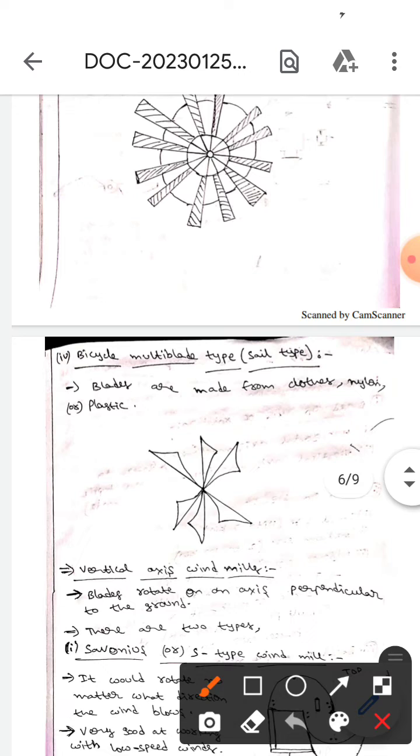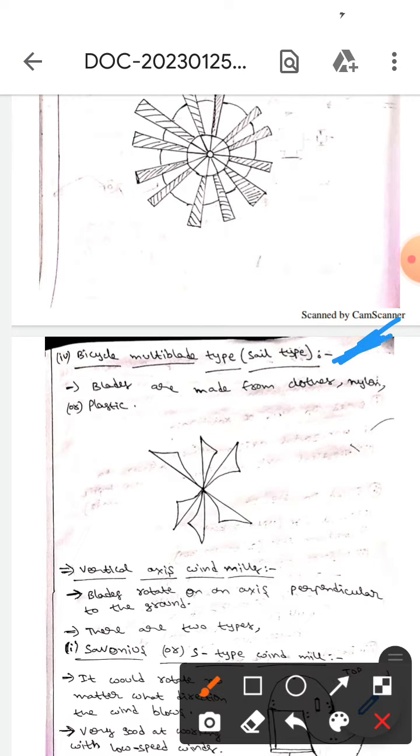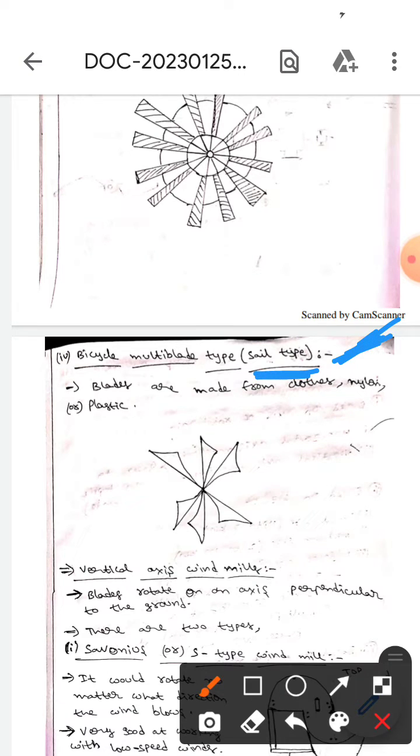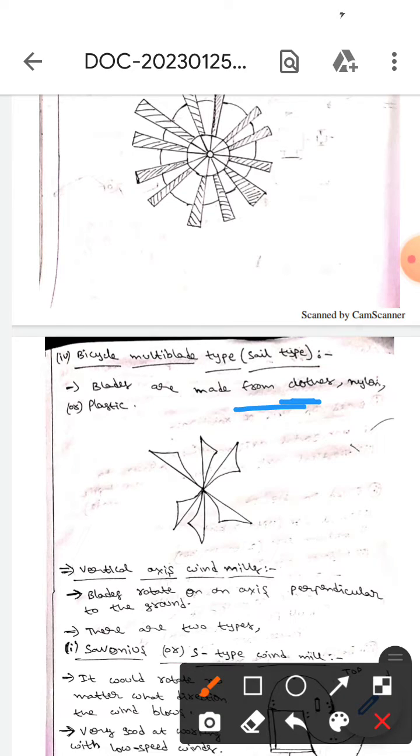The next one is bicycle multi blade type. It can also be known as sail type windmills. Here blades are made from cloth, nylon, or plastic. The shape will be like this.